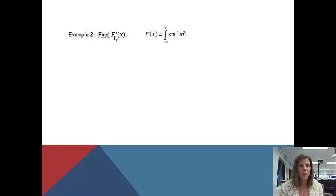Example two, find f prime of x given that f of x equals the integral of the sine squared t dt. First of all, we are going from a constant to a variable, so I'm all set with that.